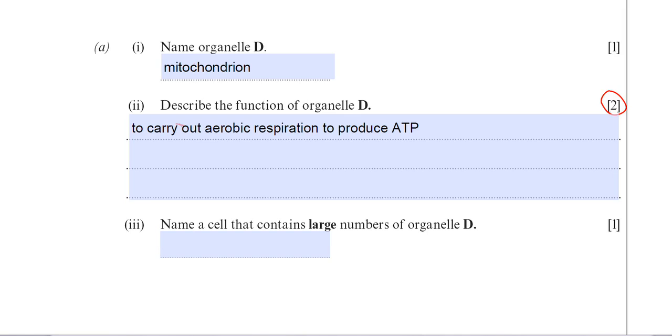A3: name a cell that contains large numbers of organelle D. This is a very common question that's asked quite a lot. The answer really depends on how much reading around the subject you've done. The most common answer actually would be muscle cells. Muscle cells carry out contraction and that does require a great deal of energy and consequently will need large numbers of mitochondria.